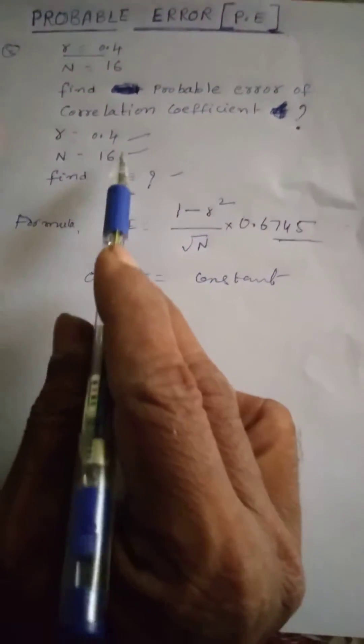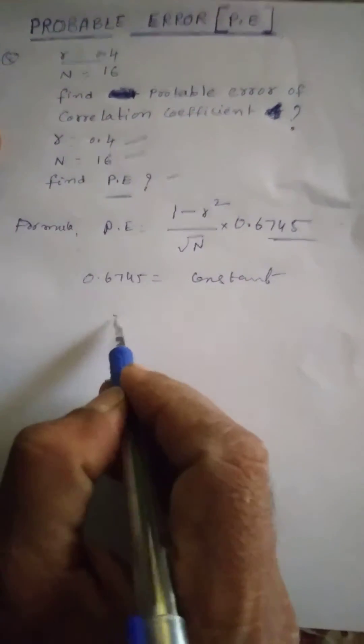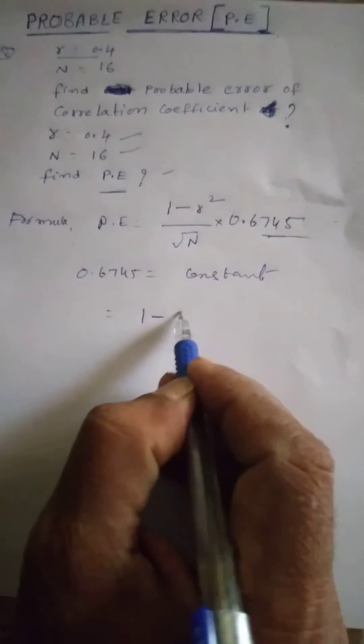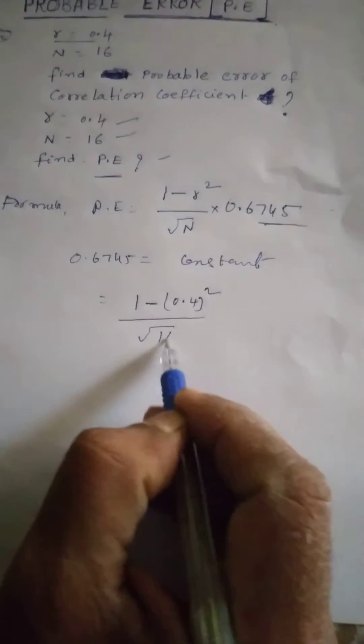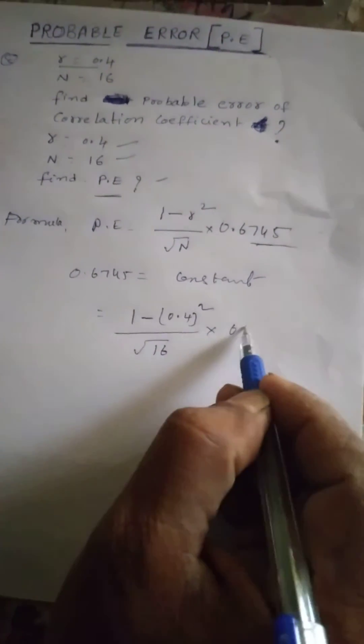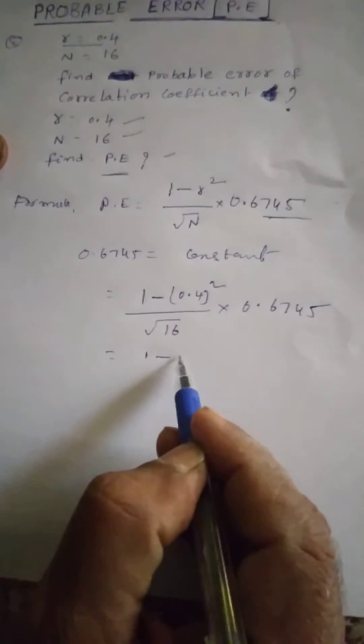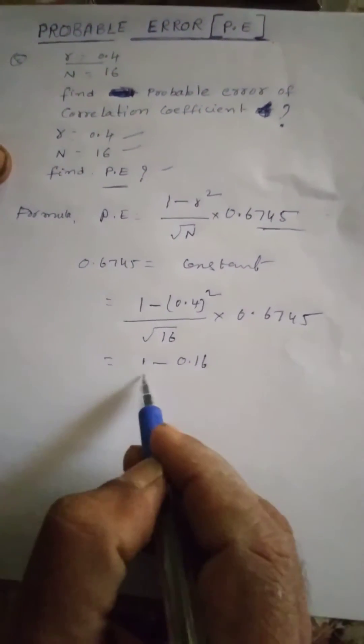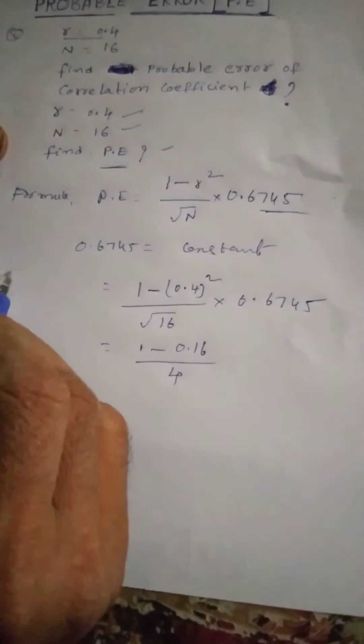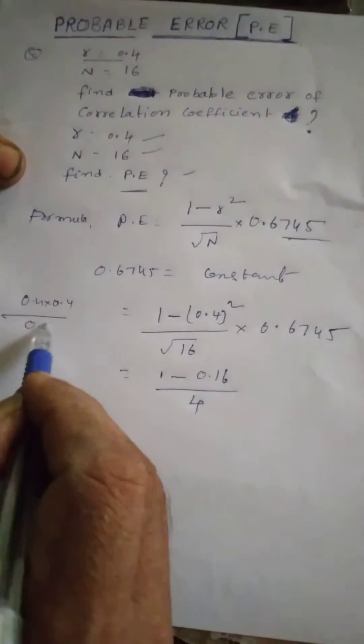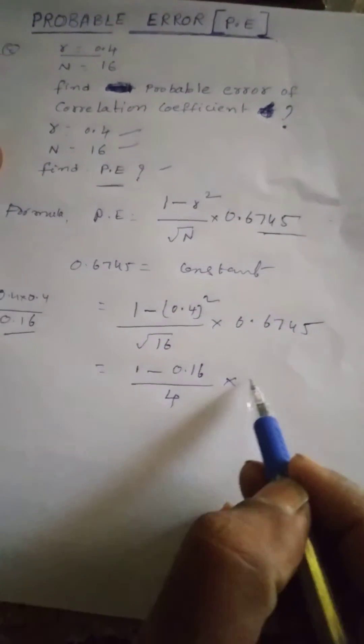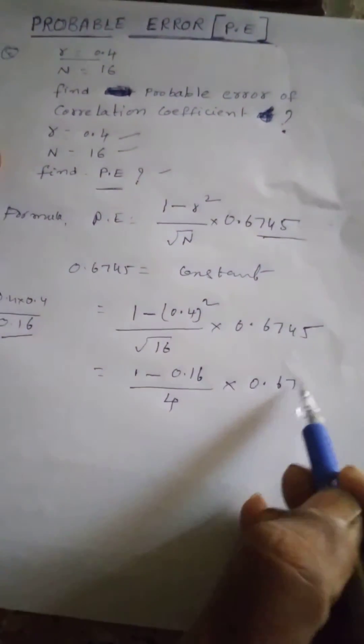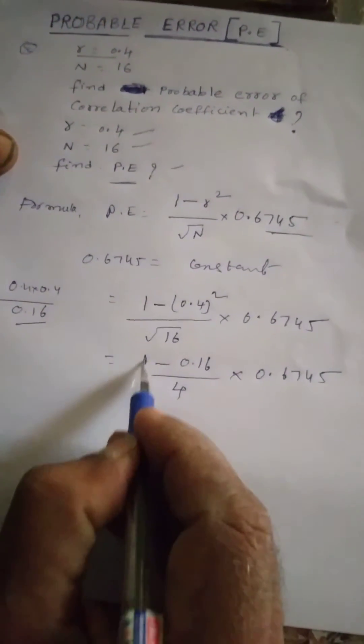Substitute the values in the formula. 1 minus 0.4 whole square by root 16 into 0.6745. 1 minus 0.16 by 4. Here is 0.4 into 0.4, 0.16.